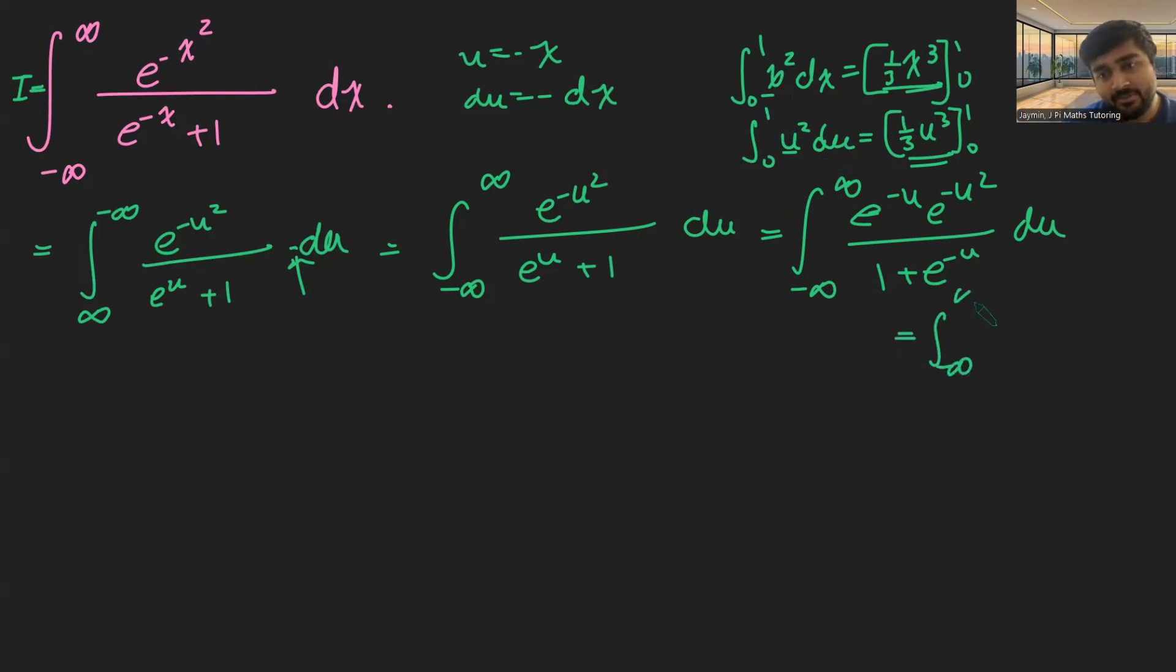So this, in fact, is the same as the integral from minus infinity to infinity of e to the minus x times e to the minus x squared, all over 1 plus e to the minus x dx. And this is still equal to i.